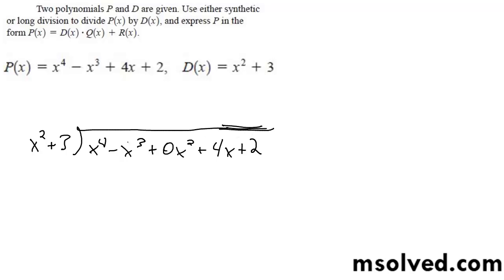So x squared goes into x to the fourth, x to the second times, or x squared times. So x to the fourth,